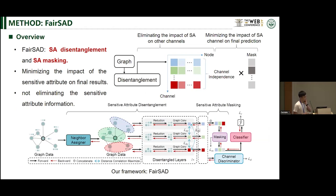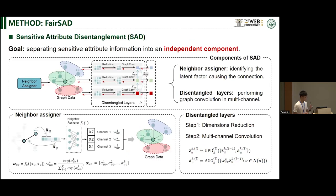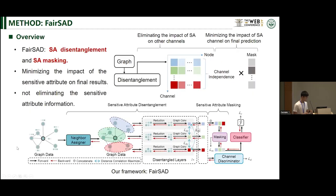Here is the overview of our framework. FairSet consists of two components: sensitive attribute disentanglement and sensitive attribute masking. As we can see from the top right corner of the diagram, the impact of sensitive attributes on other channels is removed by channel independence. In the sensitive attribute masking stage, the minimal mask value is assigned to the sensitive attribute-related components. Next, we will introduce the various components of FairSet in detail.